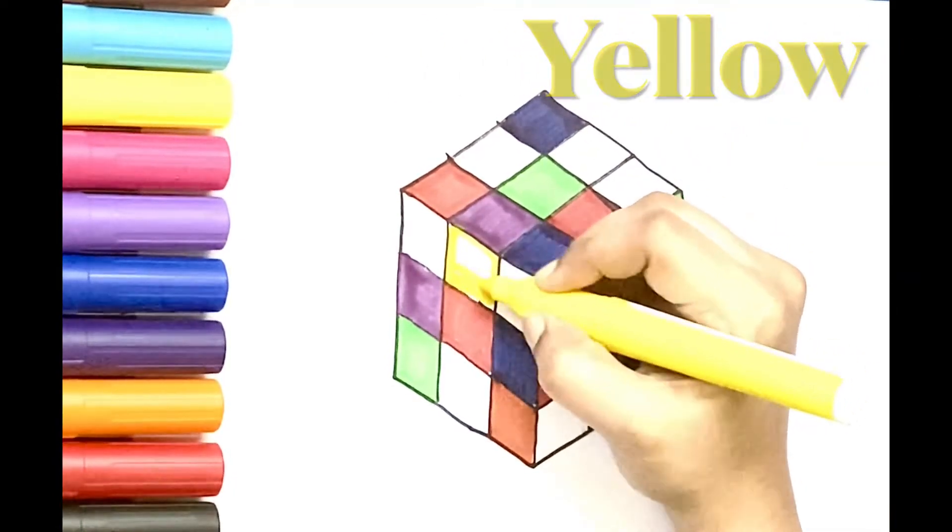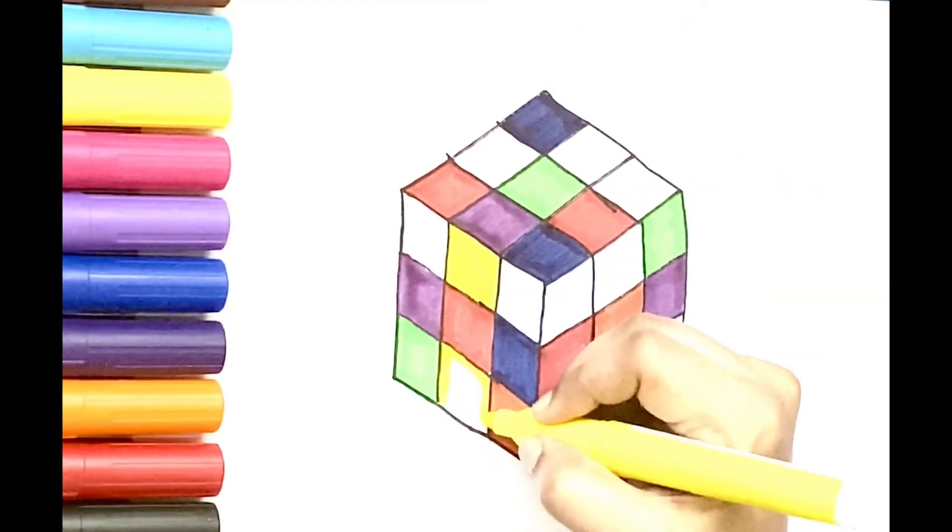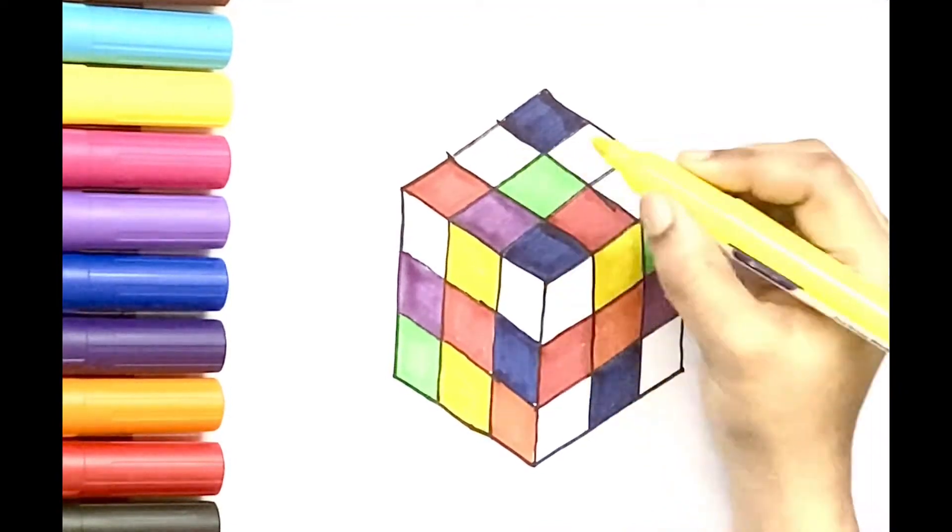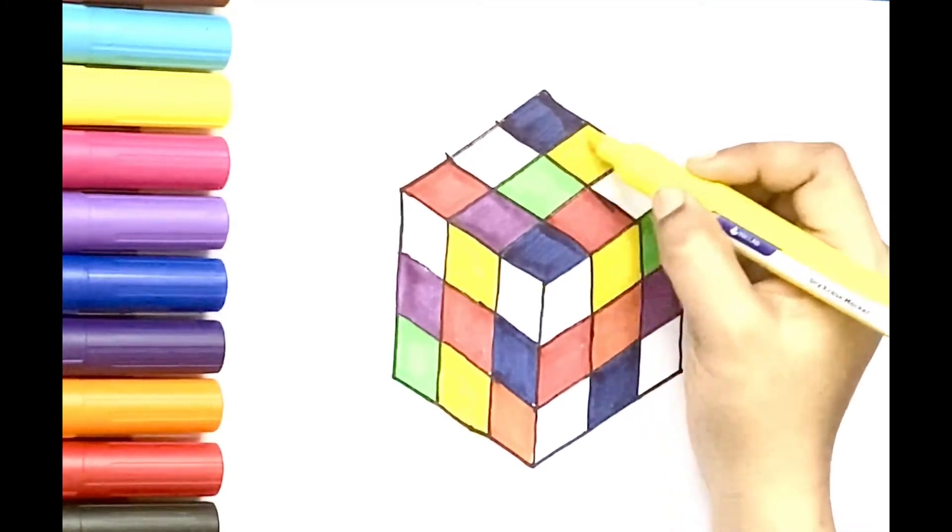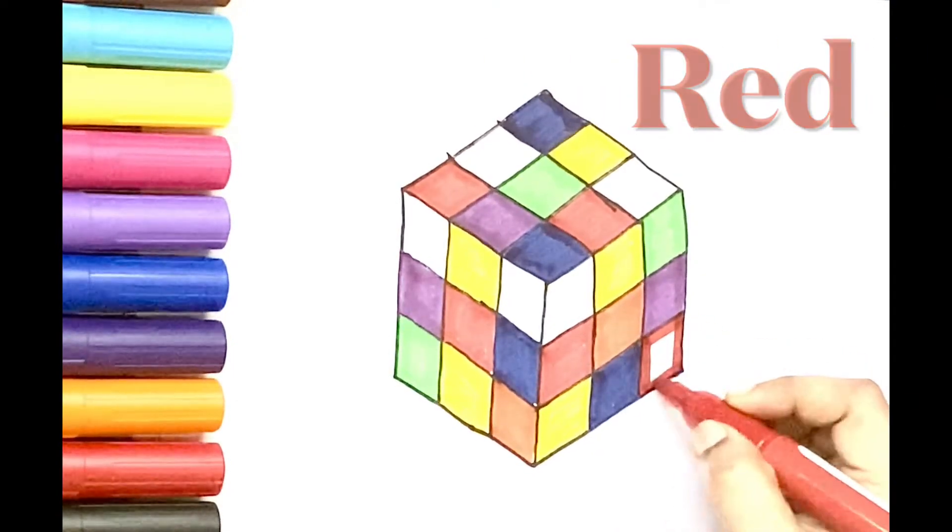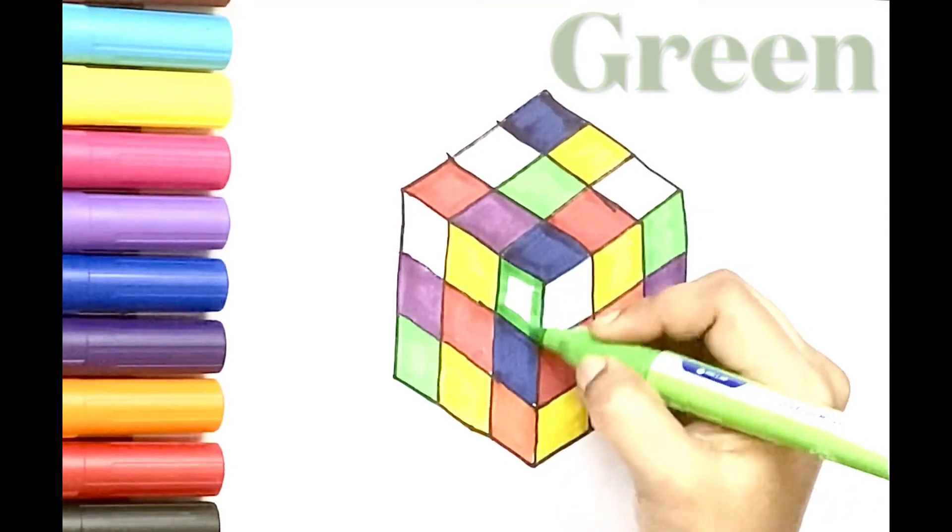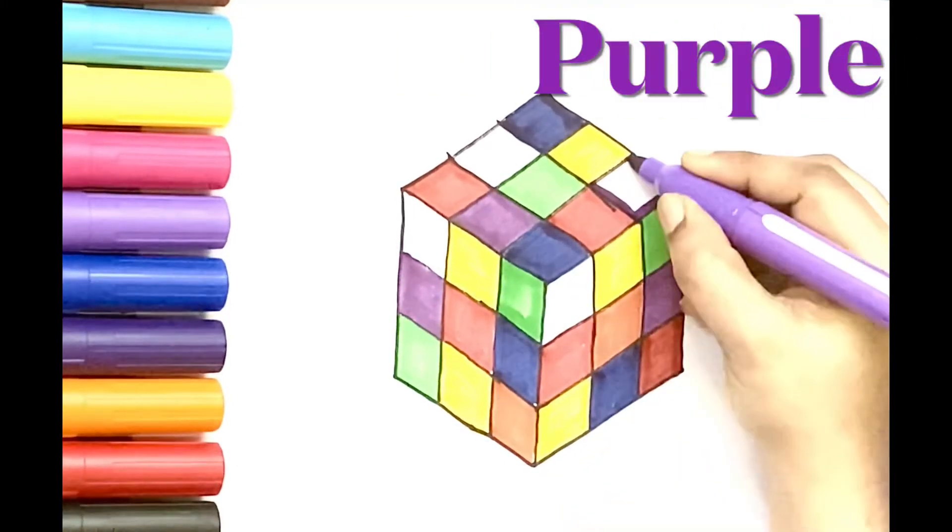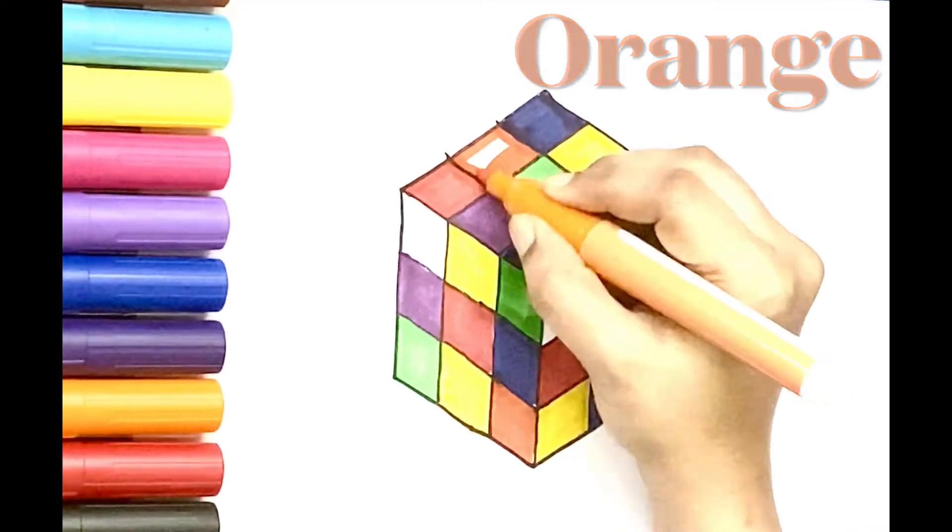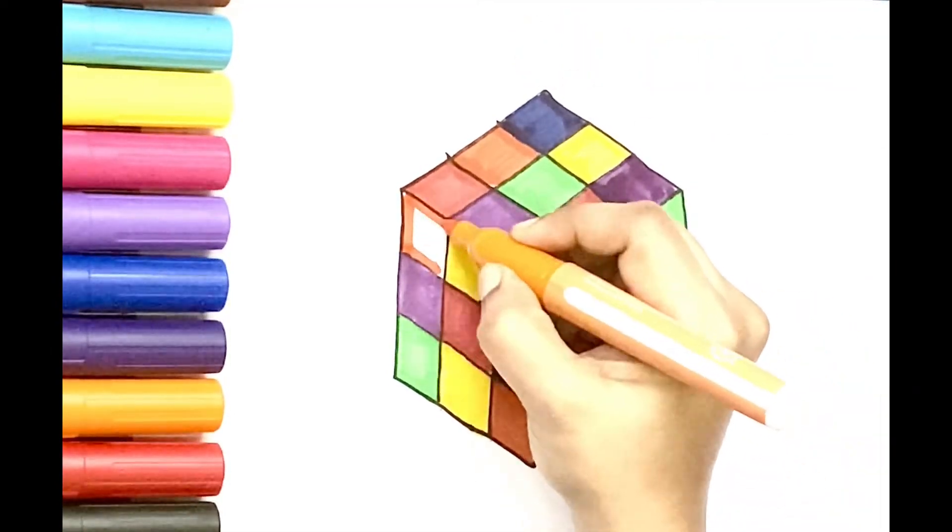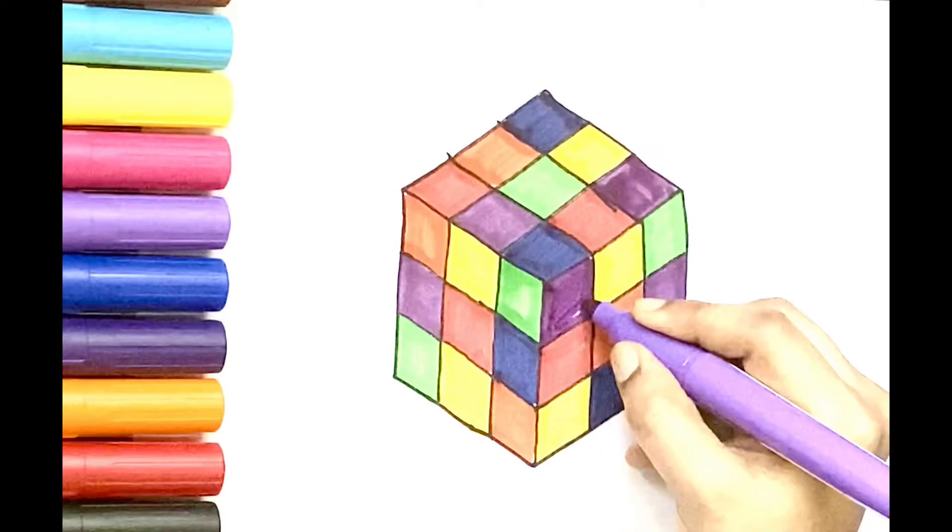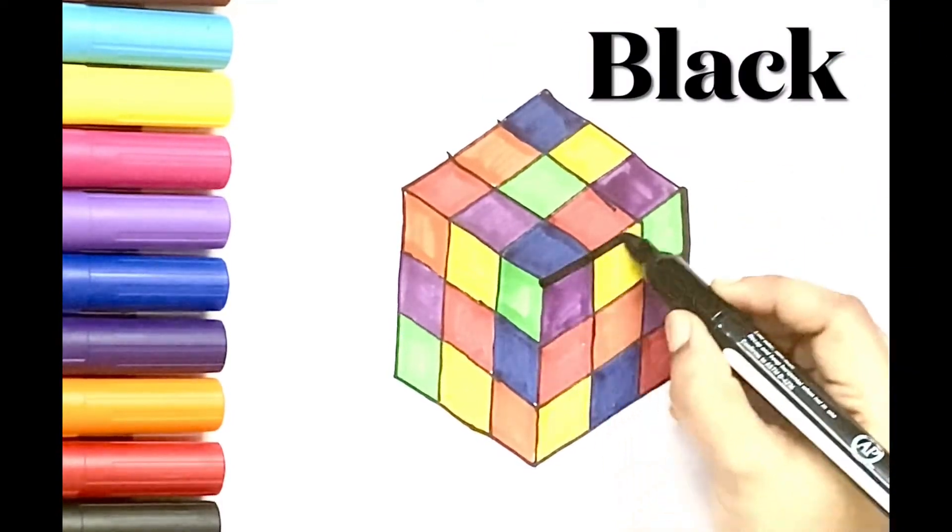Yellow, red, green, purple, orange. Now black color for the boundary.